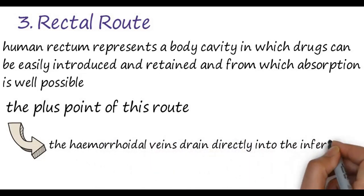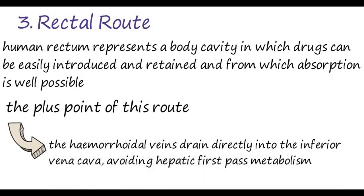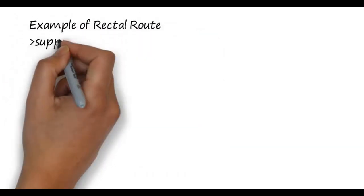The hemorrhoidal veins draining directly into the inferior vena cava avoids hepatic first-pass metabolism. First-pass metabolism is one of the disadvantages of the oral route, because the drug may be degraded — wasted by 20, 30, 40, or even 50 percent — due to enzymatic degradation. An example of the rectal route dosage form is suppositories.